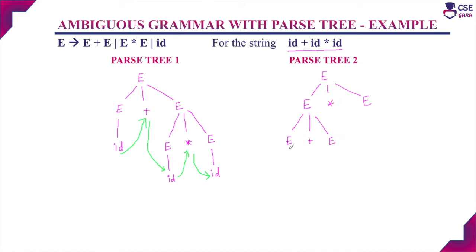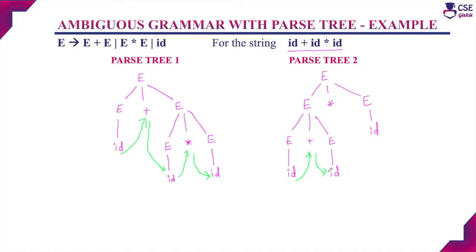For the non-terminal E we apply E → id, then E → id. For all remaining non-terminals E, we apply the production E → id. Now we have derived the string id + id * id.